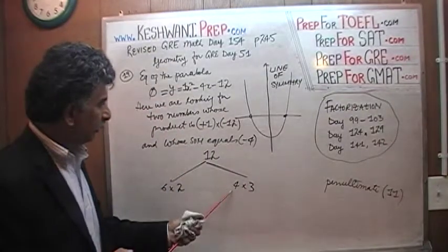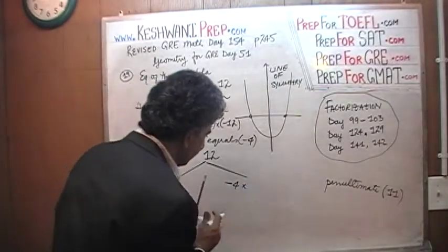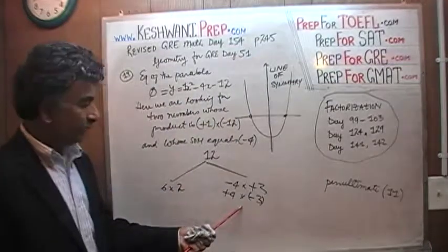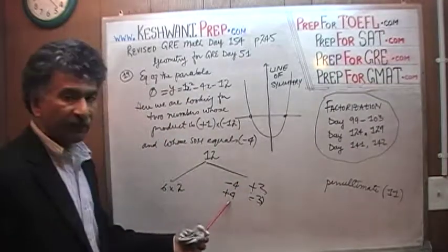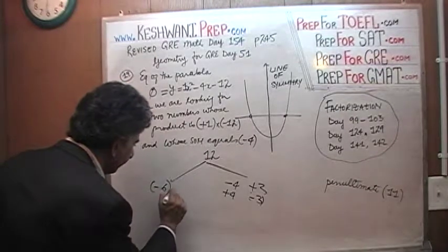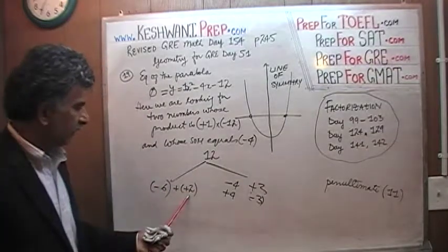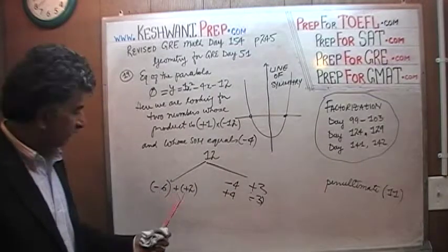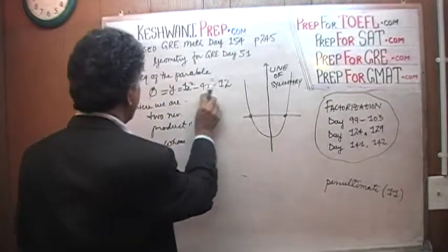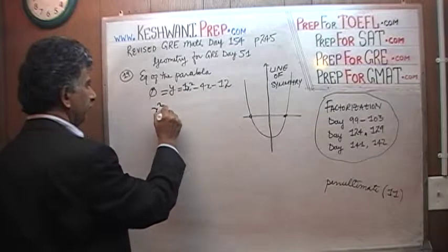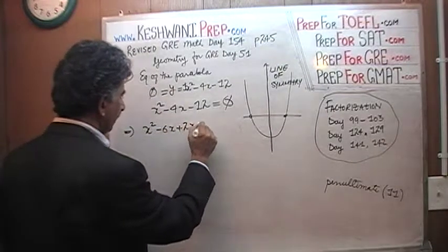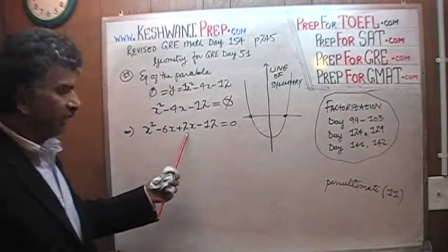With 4 and 3, no matter what signs you assign, you get a sum of either negative 1 or positive 1 — not negative 4. So we have to work with 6 and 2. Since we need a sum of negative 4, let's try negative 6 and positive 2 — voilà! Negative 6 and positive 2 give a sum of negative 4. So x squared minus 4x minus 12 equals 0, which we rewrite as x squared minus 6x plus 2x minus 12 equals 0, since negative 6x plus positive 2x gives us negative 4x.